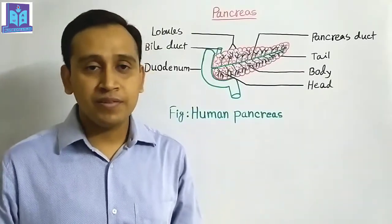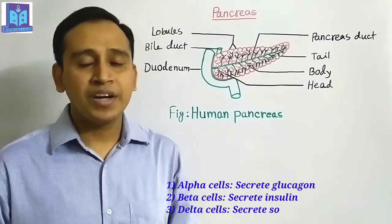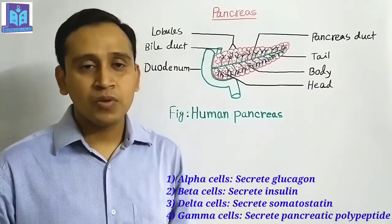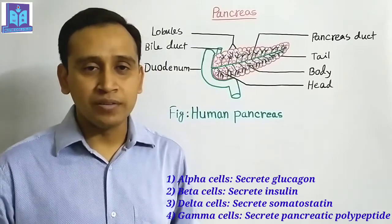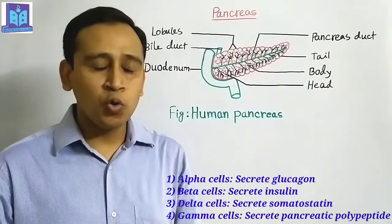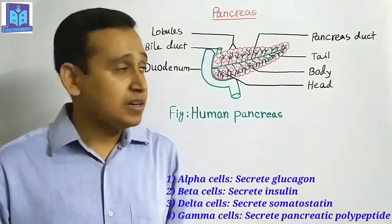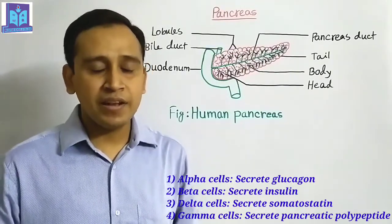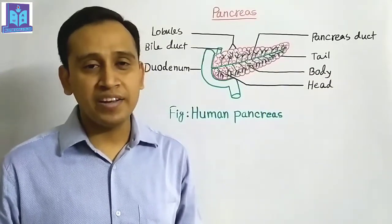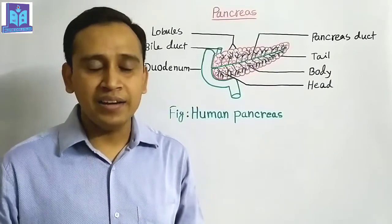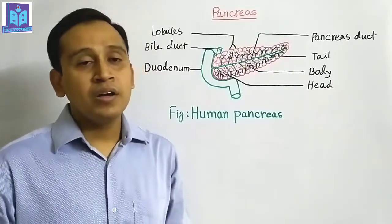There are four types of cells found in the endocrine glands: alpha, beta, delta, and gamma. Alpha cells secrete glucagon, which increases the glucose level in blood. Beta cells secrete insulin, which decreases the glucose level in blood. Delta cells secrete somatostatin, which regulates the function of alpha and beta cells. Gamma cells secrete pancreatic polypeptide. The secretion of exocrine glands is called pancreatic juice. Pancreatic juice is alkaline in nature, and 98% of its components is water; the rest 2% are inorganic and organic substances.